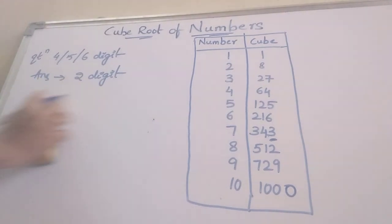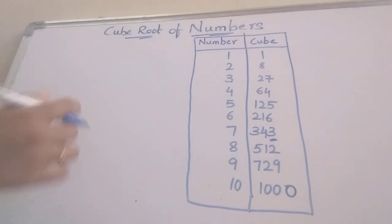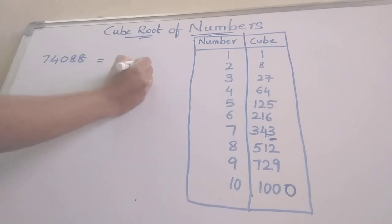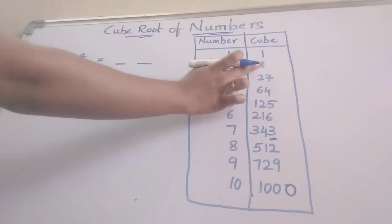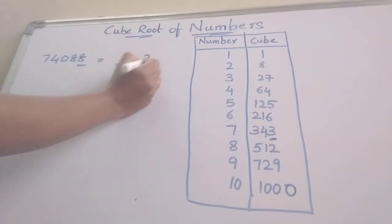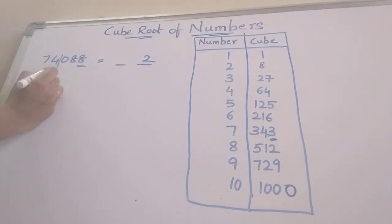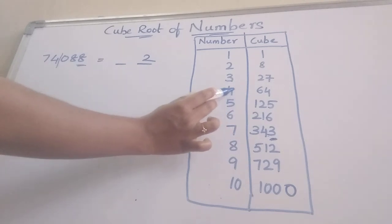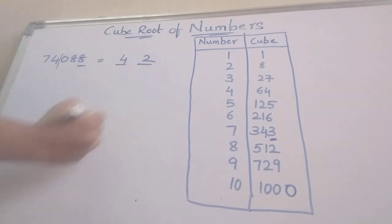Now we can take one more example: finding the cube root of 74088. First, observe the last digit, which is 8. Where is 8 in the table? Directly write 2 here. After that we omit the last 3 digits and take 74. 74 lies between 64 and 125, so we write the least number, which is 4. The answer is 42.